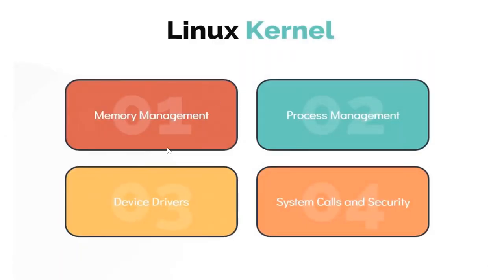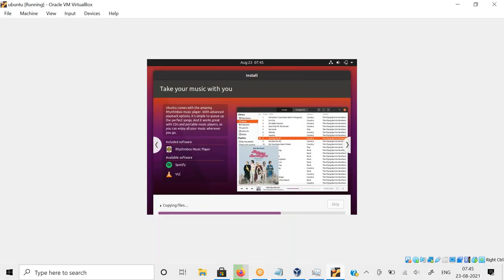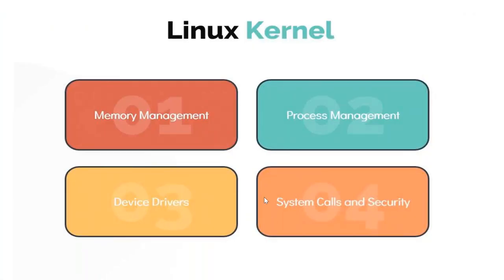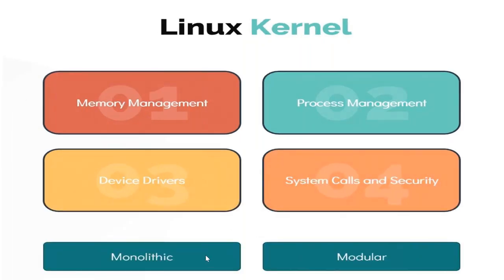If a process wants CPU cores, threads, or memory from RAM, the Linux kernel takes care of it. Linux has these functions: memory management, process management, and device drivers. If you put in a pen drive or hard drive, you need to access those files - the kernel does all of that. It also does system calls and security. In Linux there are normal users and root users who do the main stuff. It's a monolithic and completely modular kernel - you can develop modules for Linux. For example, if Samsung develops a new device that needs device drivers, people write modules for that new hardware in the Linux kernel.